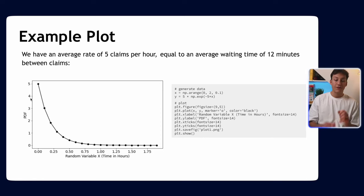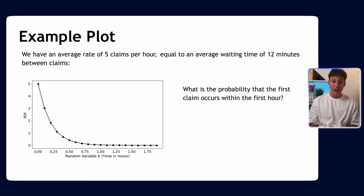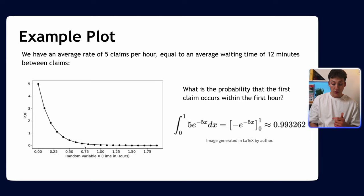Notice here, remember the PDF is not the PMF. The probability of zero is not actually five percent or 500 percent—that'd be incorrect. To find the probability of something happening in the PDF, you have to integrate it because it's continuous, not a mass function. So if you want to answer, what is the probability that the first claim occurs in the first hour, we have to integrate from zero to one. We integrate the function and get roughly 99.3%.